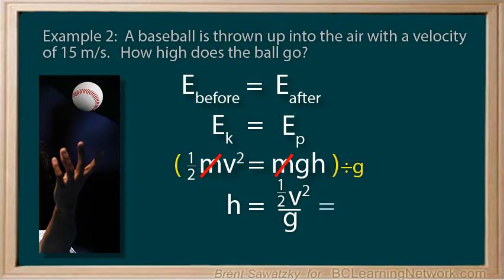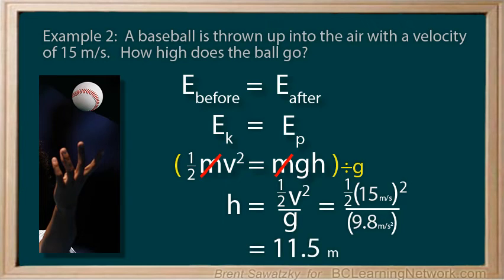Now, we can put brackets in place of our variables and plug in our numbers. And, then, we calculate h to be 11.5 meters. So, it rises to 11.5 meters above where it was thrown. And, at the very top of its flight, all the kinetic energy has been converted into potential energy. The velocity is zero, no more motion energy at the top. And, the height is a maximum.